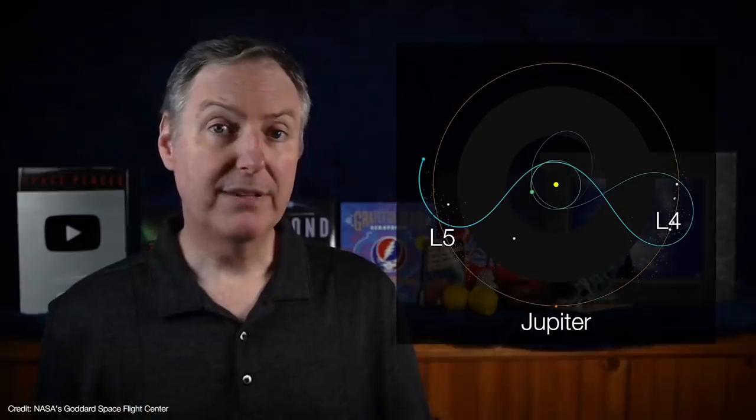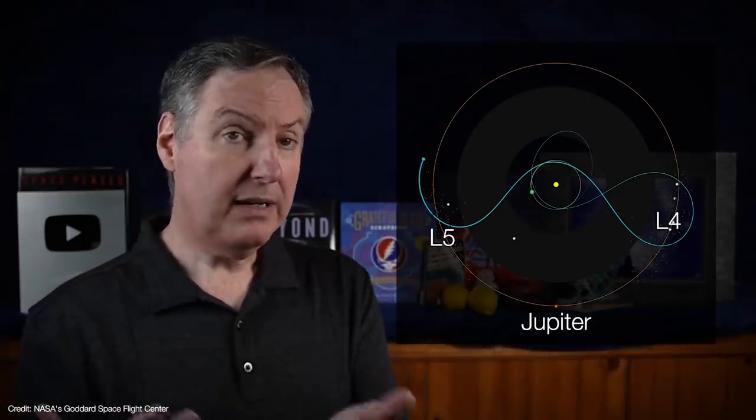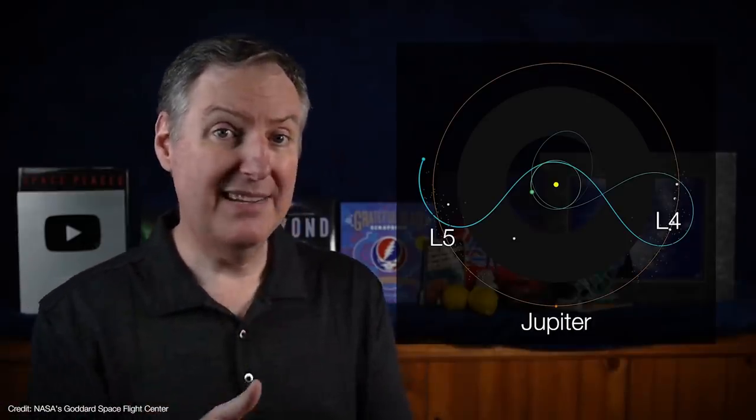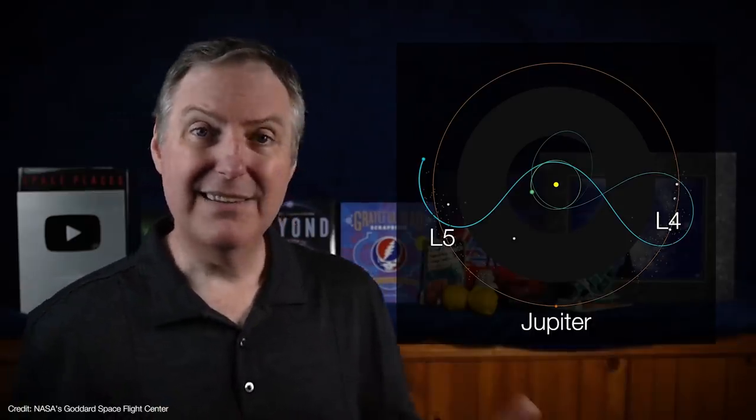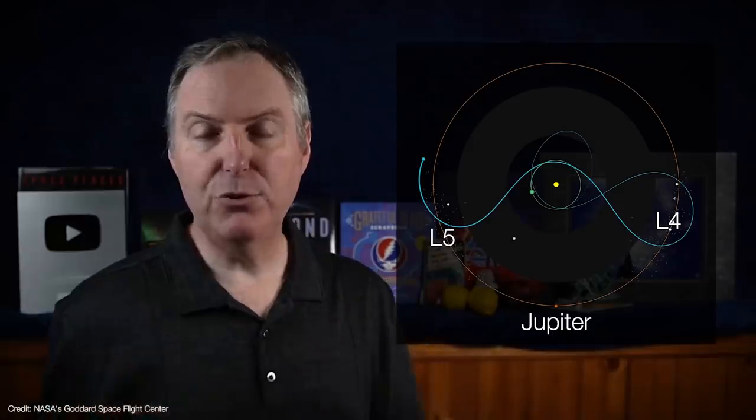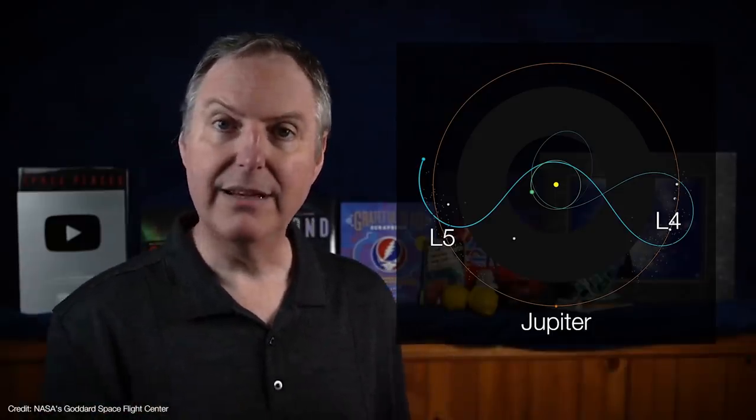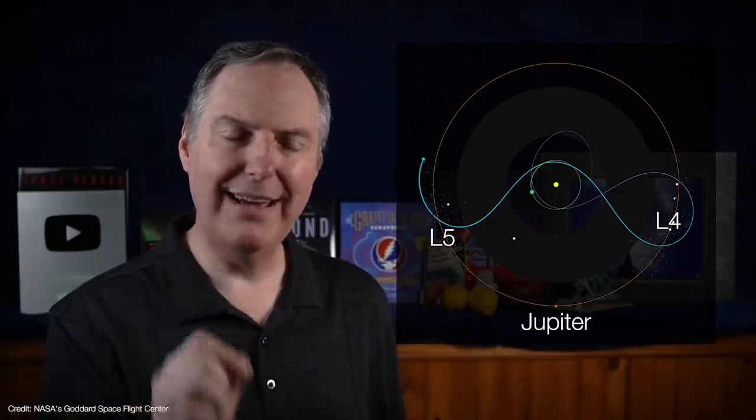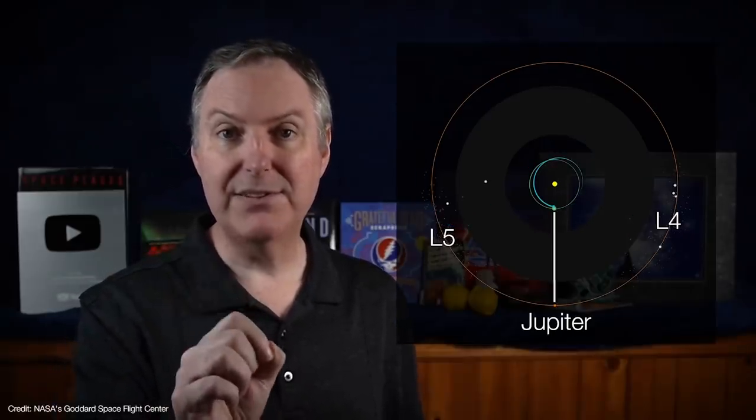And you might be wondering, if Lucy is going to be in Jupiter's L4 swarm, why not use the giant planet itself as a gravity assist instead of Earth? Well, the fact is that illustrations like these fail to capture just how vastly, hugely, mind-bogglingly big space is. The reality is that the closest Lucy will ever get to Jupiter is right after its first gravity assist at Earth.